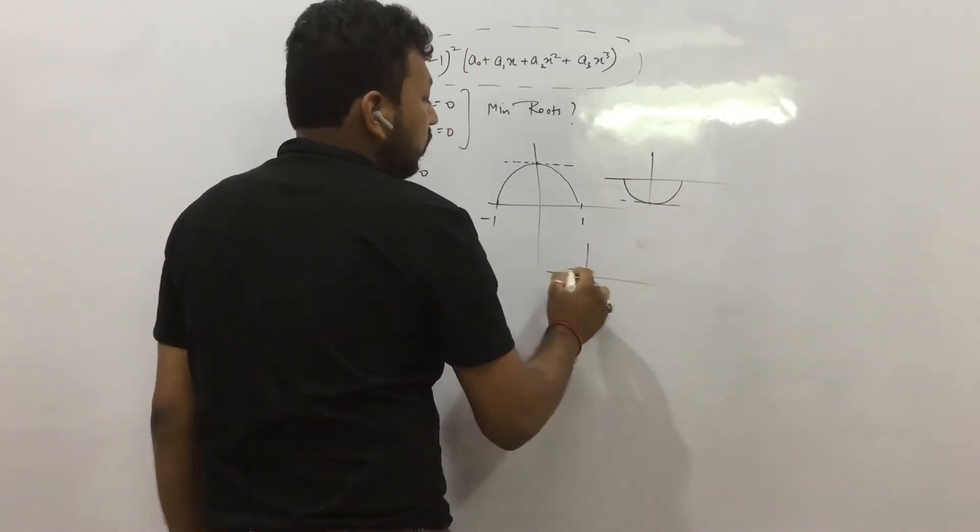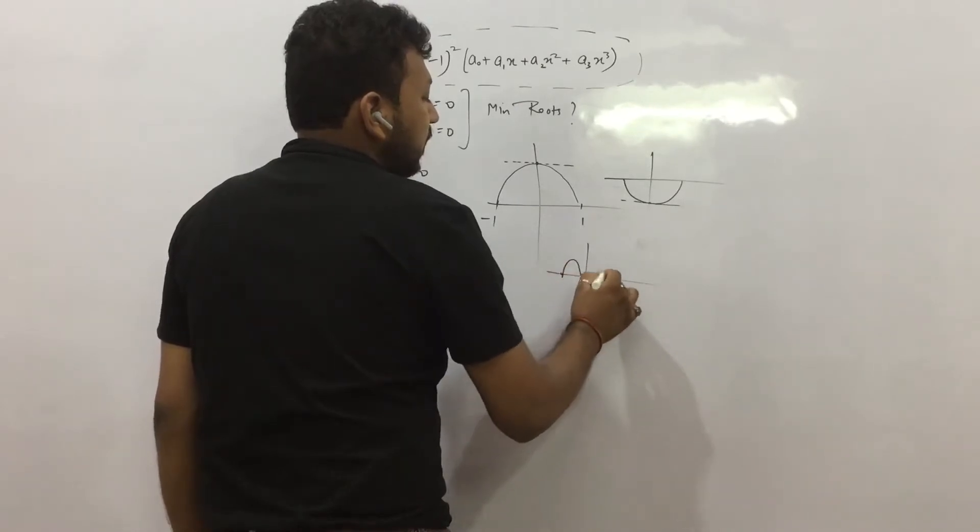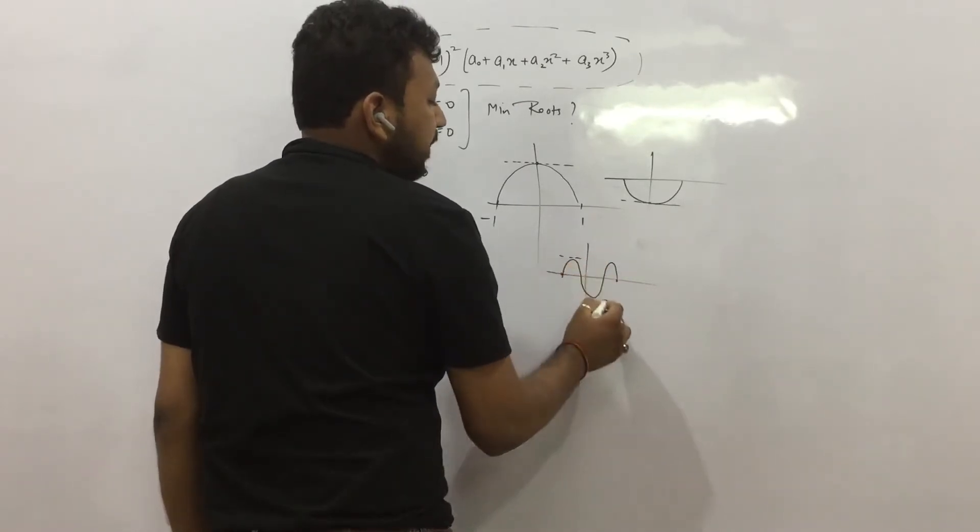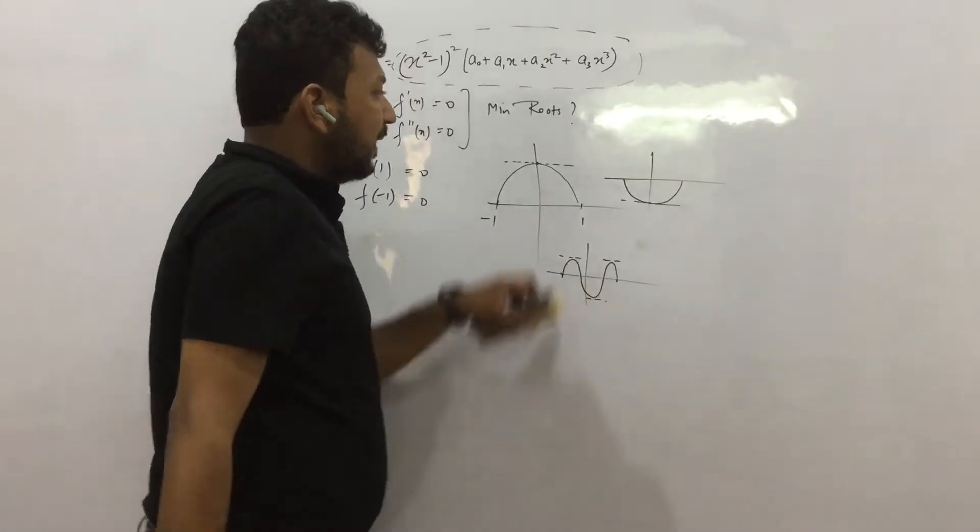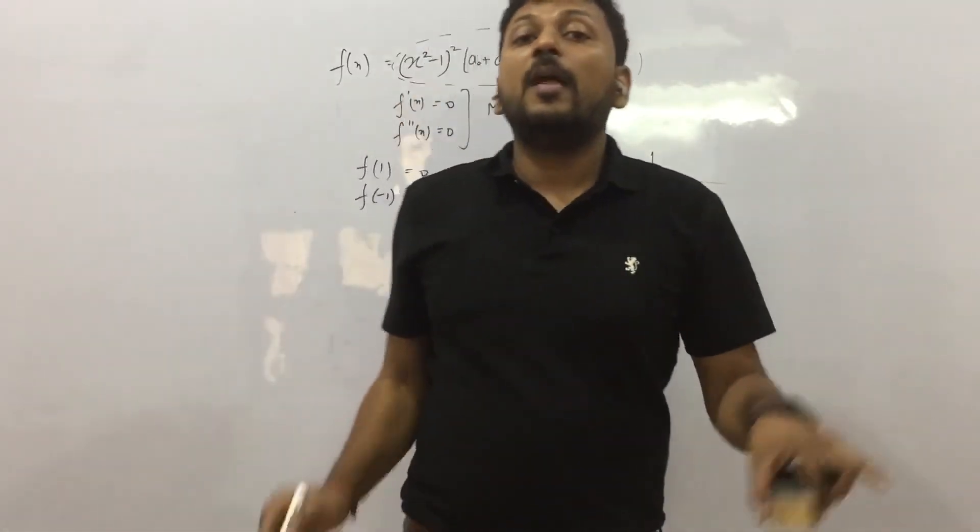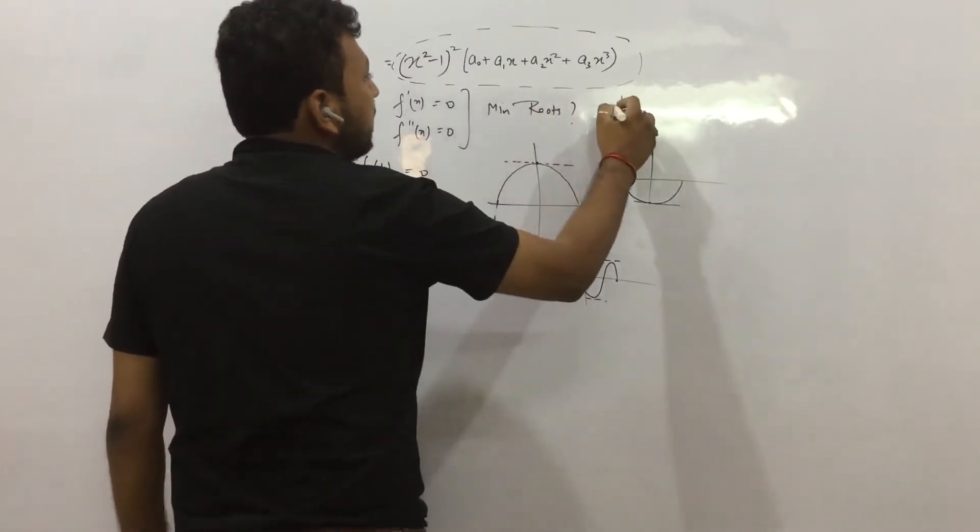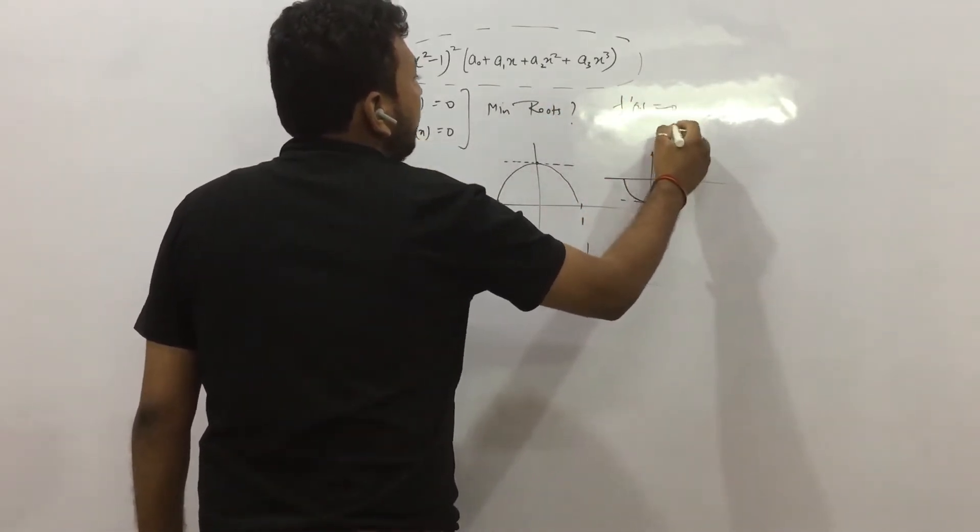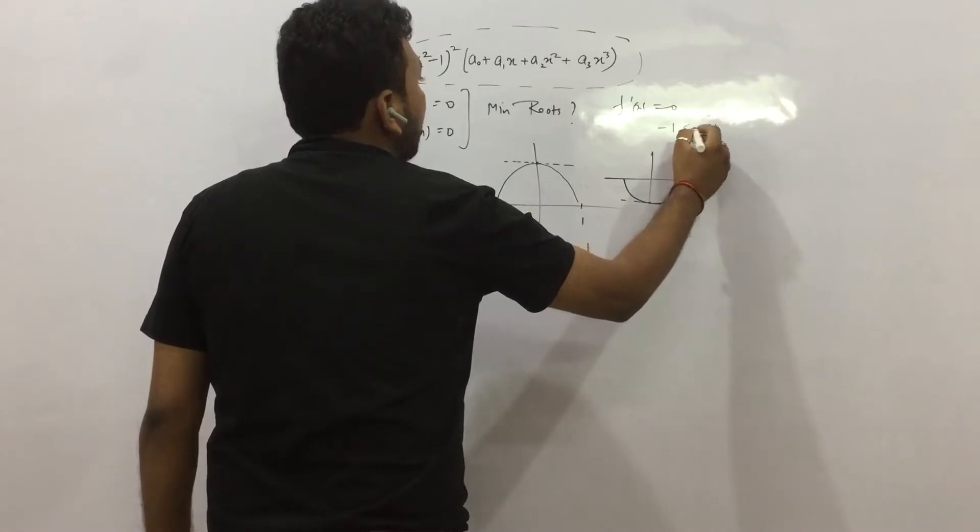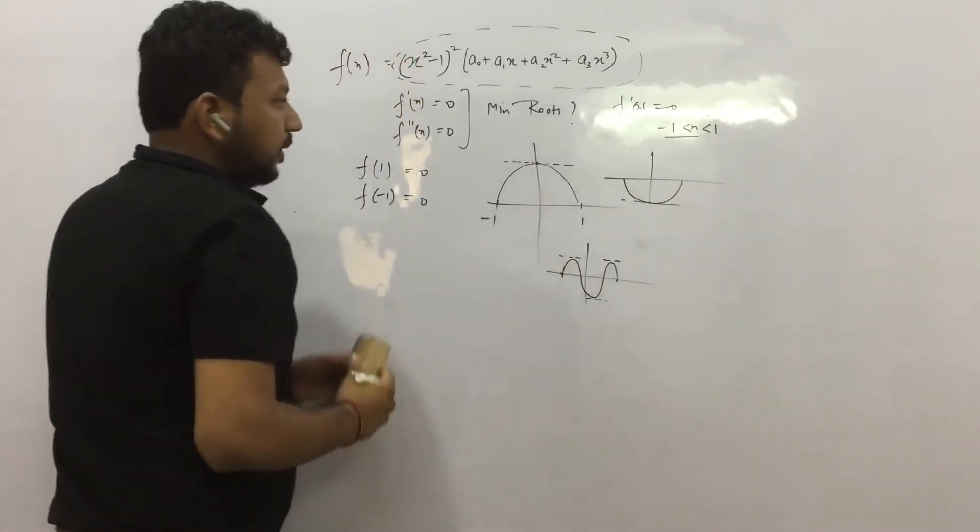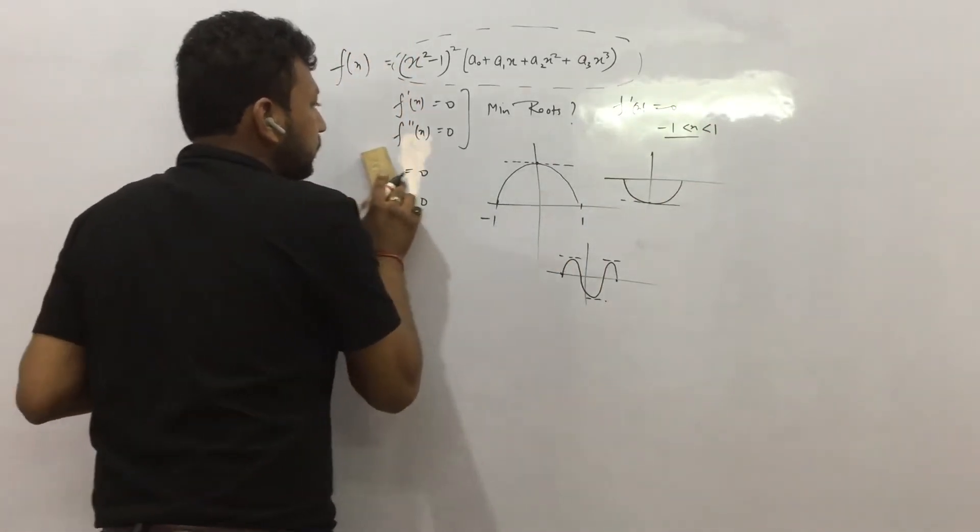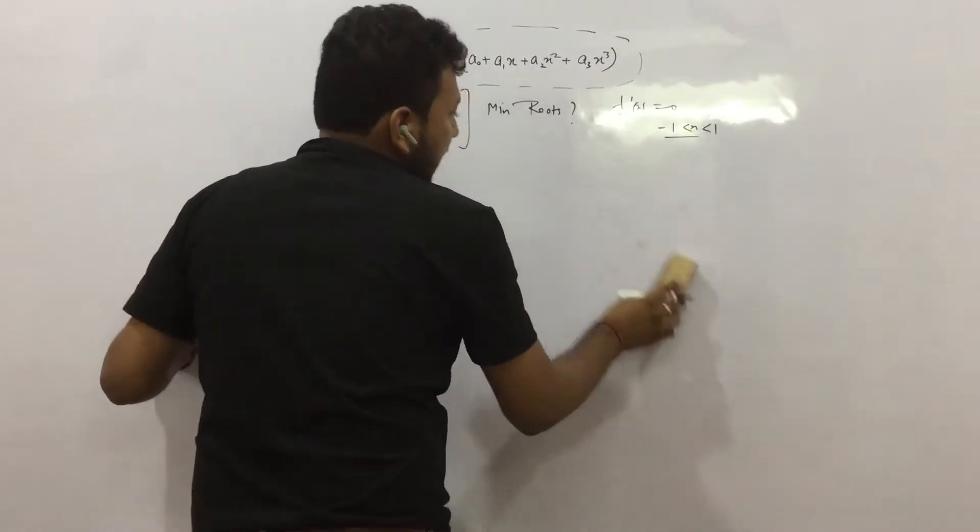So if it goes like this then also the slope is 0 at some point. And if it goes like this, the slope can be 0 at multiple points. But at least one root we have. So f'(x) = 0, the slope of the graph. So f'(x) is equal to 0 at some point between -1 and 1. This is one thing. I am erasing this now.